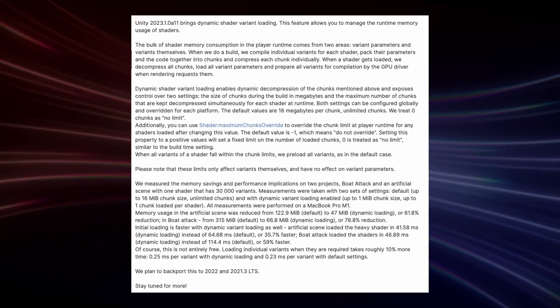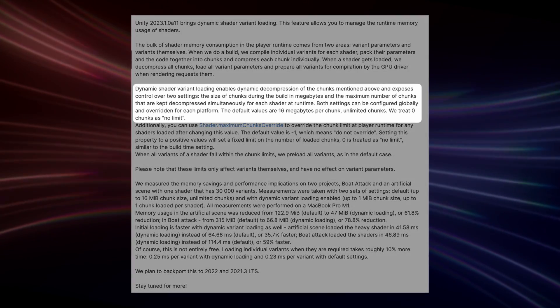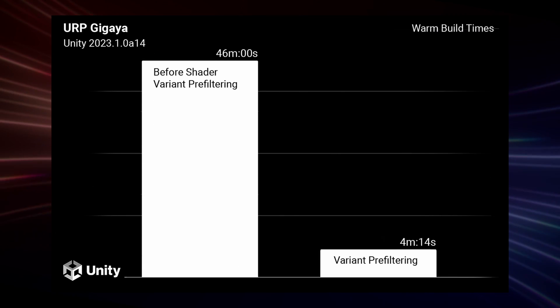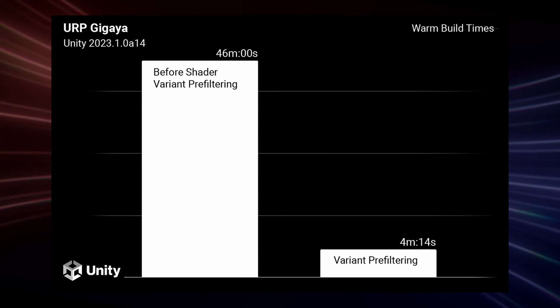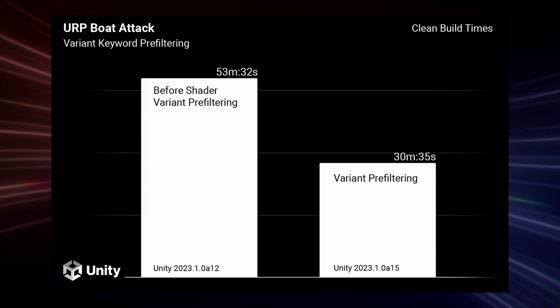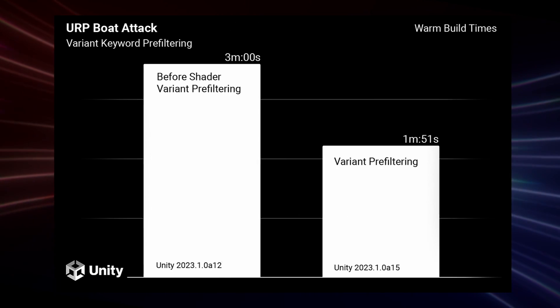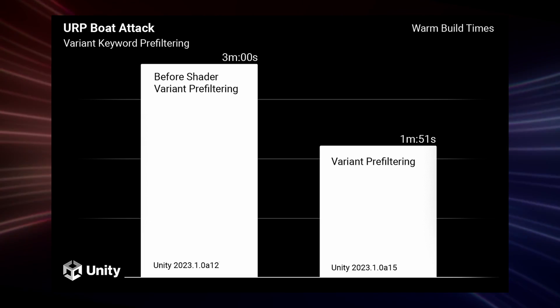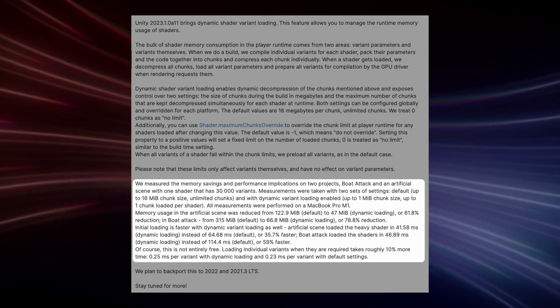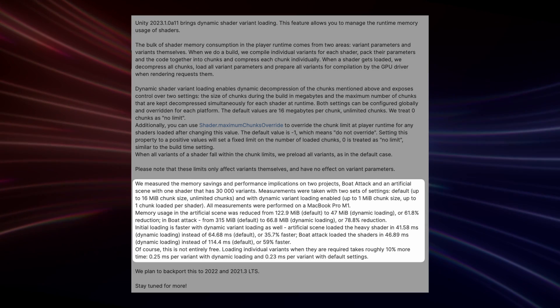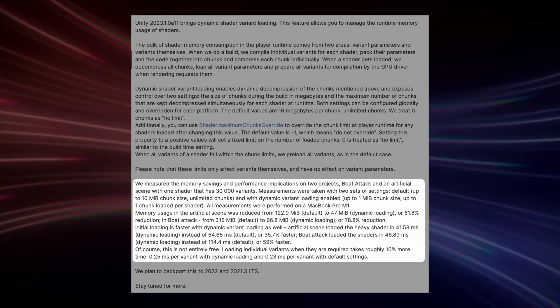Dynamic shader loading provides additional control over shader loading behavior and memory usage, and variant keyword pre-filtering introduces the early exclusion of multi-compile keywords based on pre-filtering attributes driven by render pipeline settings. These changes significantly reduce shader memory usage, the amount of variants being enumerated for potential stripping and compilation, and shader processing time for both clean and warm project builds.